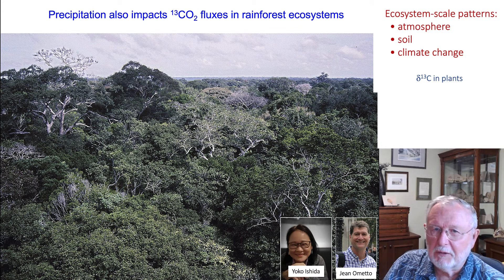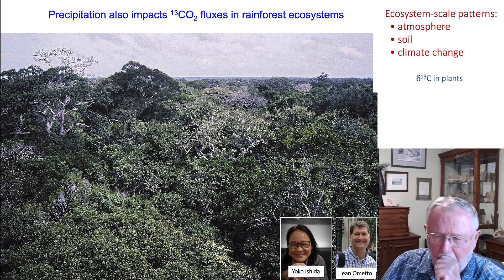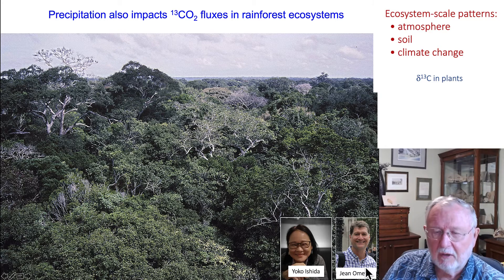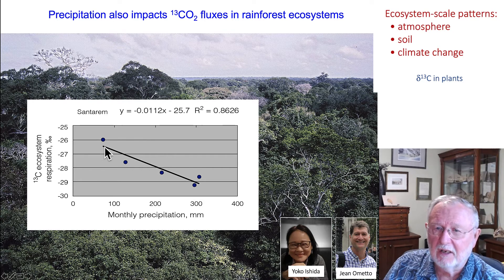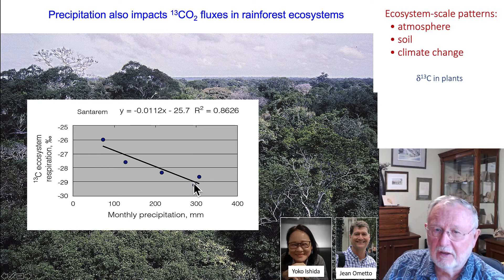This precipitation impact can also be measured in the CO2 fluxes of rainforests, where Yoko Ishida and Jean Almeida from Brazil measured the isotope ratio of ecosystem respiration on a monthly basis in Santarém, in the middle of the tropical rainforests of Brazil, and saw that as the seasonal or monthly precipitation changed, there were big changes in the isotope ratio of ecosystem respiration.